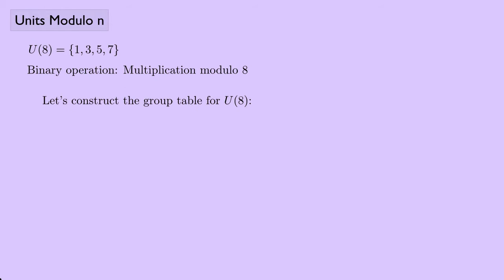Now I want to show that U(8), which I'll call the units modulo 8, is a group under multiplication modulo 8. So we have U(8) = {1, 3, 5, 7} with the binary operation of multiplication modulo 8. Let's construct a group table.